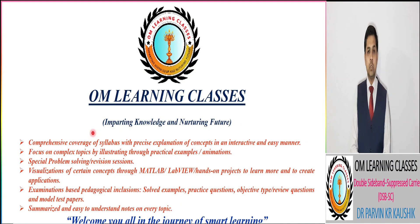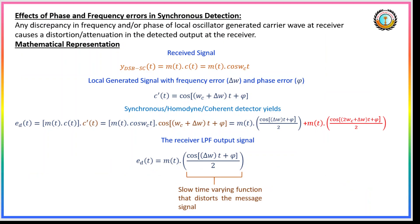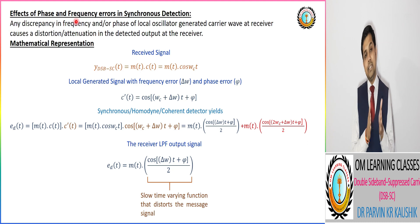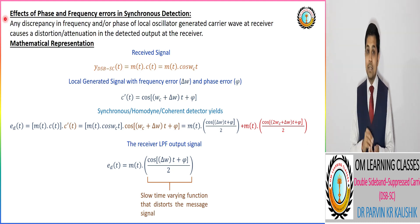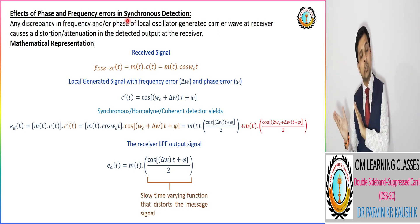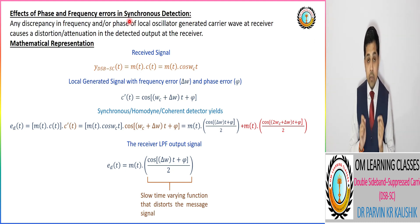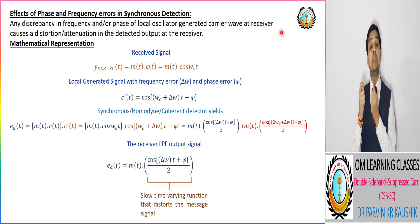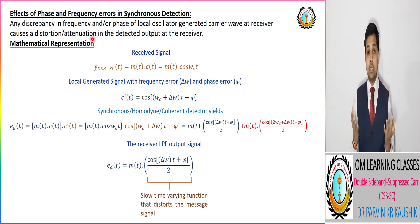Welcome to home learning classes. Here we are going to discuss what is the effect of phase or frequency error in the synchronous detector. At the receiver, the local oscillator signal must be synchronized in frequency and phase with respect to the transmitter carrier. If there is a small variation in frequency or phase, what is the outcome at the receiver?